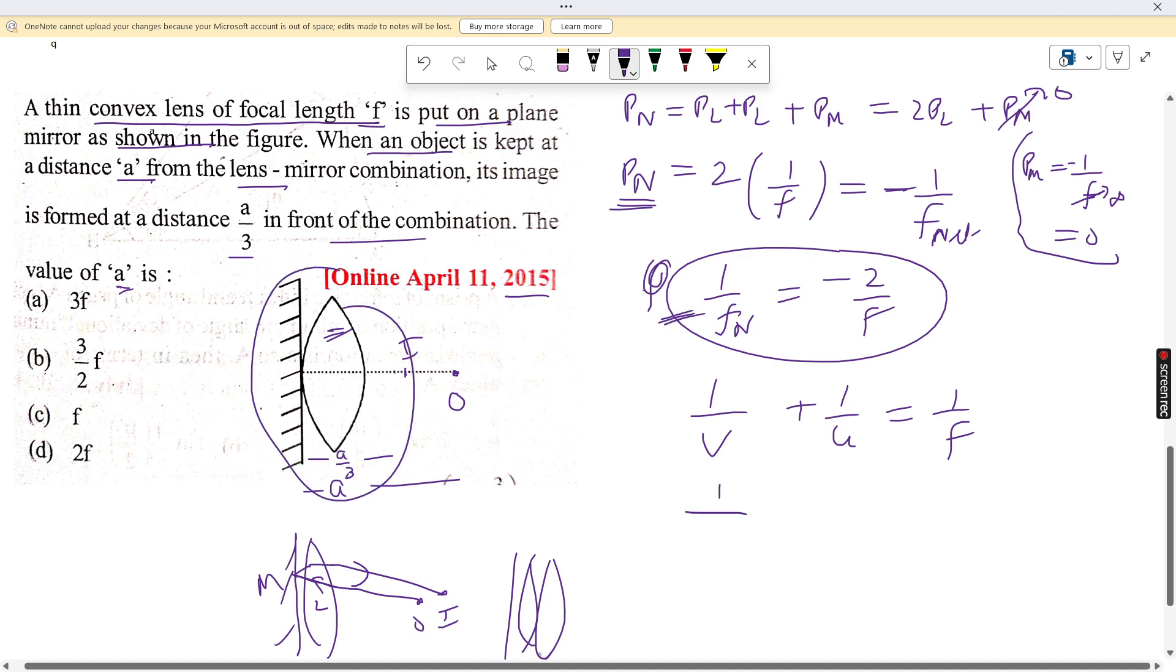So v is given as minus a/3, negative because it is on the side of the object. u is minus a, and the net power is minus 2/f. So this gives us minus 2/f, and solving this equation.